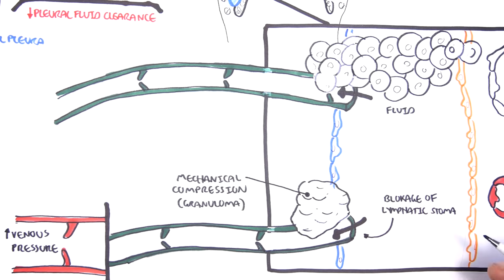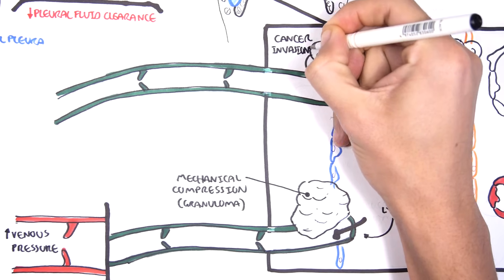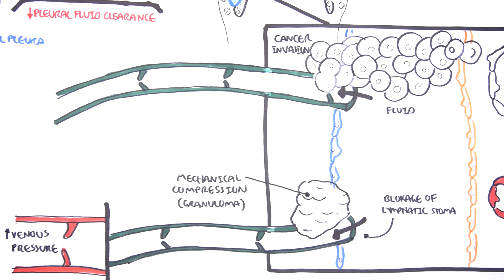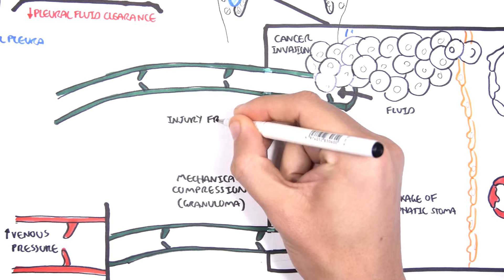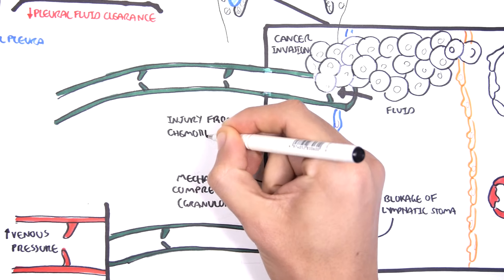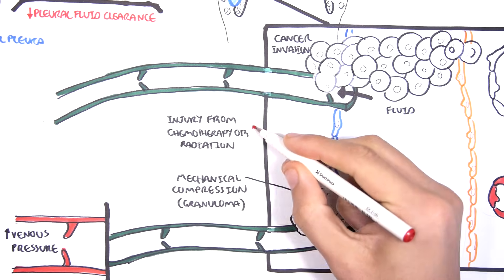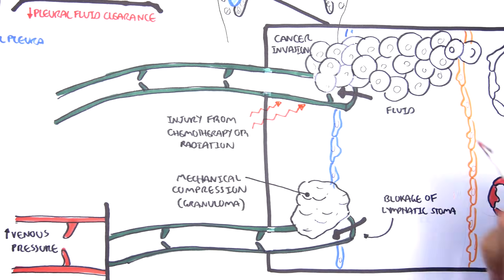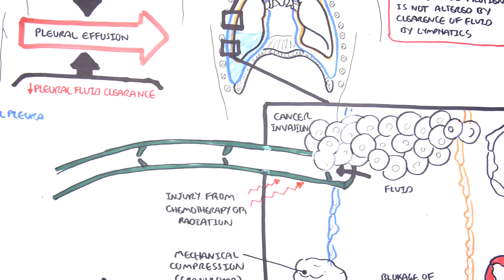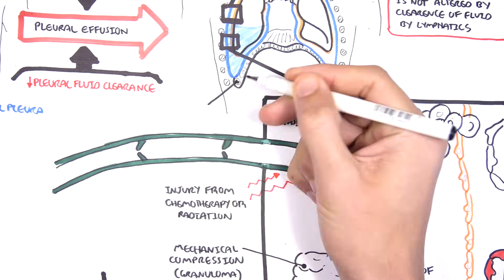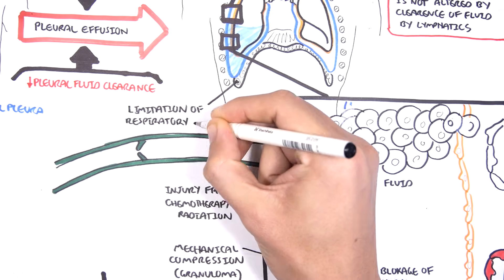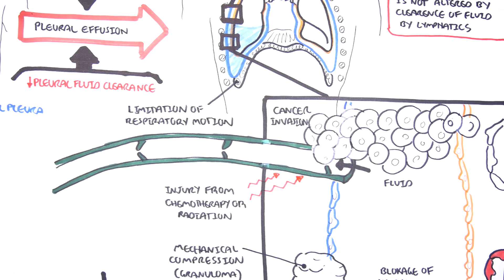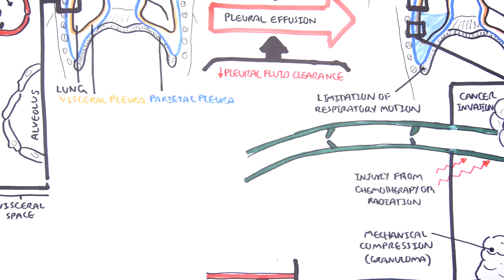Cancer invasion can block and disrupt fluid drainage, leading to pleural effusions. Chemotherapy and radiation can also damage the lymph vessels. Finally, if there is limitation of respiratory motions, this decreases the draining rate, because the lymphatics and vessels also rely on contraction of muscles to support the movement.